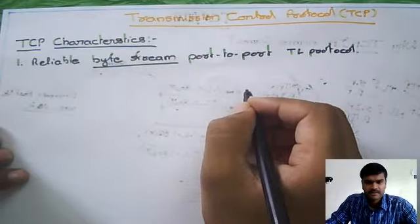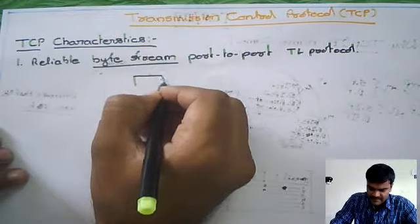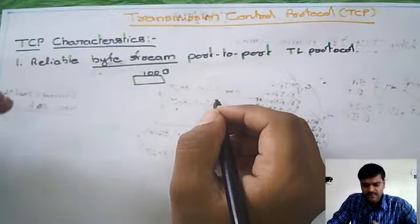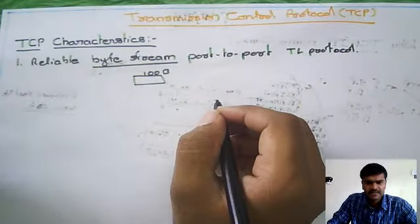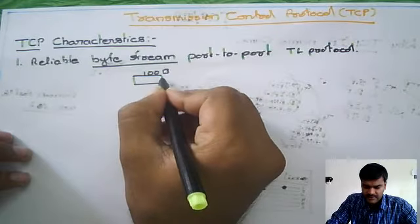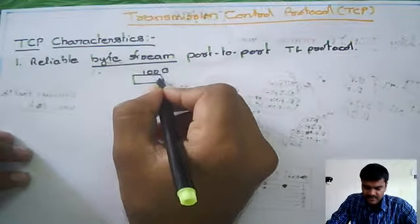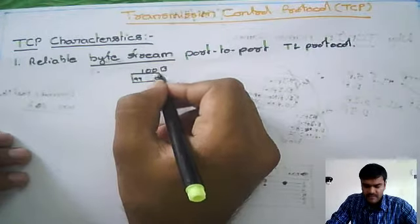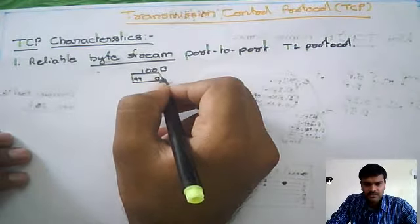Here 'byte stream' means: in TCP, suppose your packet size is 100 bytes. Everything will go in the form of bits or bytes — a group of bits is called a byte. But here we specifically call it a byte stream because in TCP we are giving each byte a single sequence number. For each byte, if the size is 100 bytes, we have sequence numbers from 0 to 99. We will use 100 sequence numbers — one sequence number for each byte.